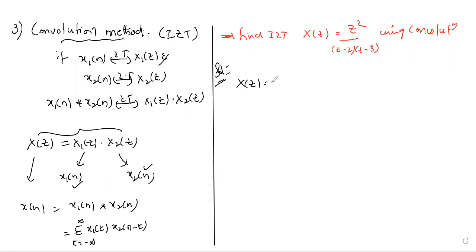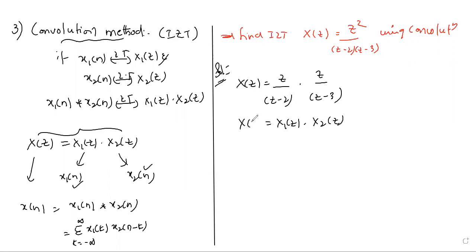Let us try to write X of Z as individual two Z-domain functions. We take this as X1 of Z multiplied by X2 of Z. Depending on our requirement and convenience — whether the given function is easily handled using partial fractions, divided into two sub-functions, or better suited for power series expansion — we can analyze accordingly. If the method name is specified, we must use that particular method.